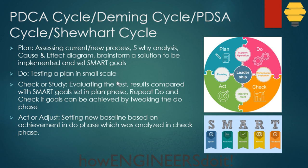In the Check phase, also called the Study phase, we evaluate the results of whatever we tested and compare them with the SMART goals. If we haven't achieved what we planned, we can go back to the Do phase, do some tweaking or improvement on what we planned, and then implement it again.